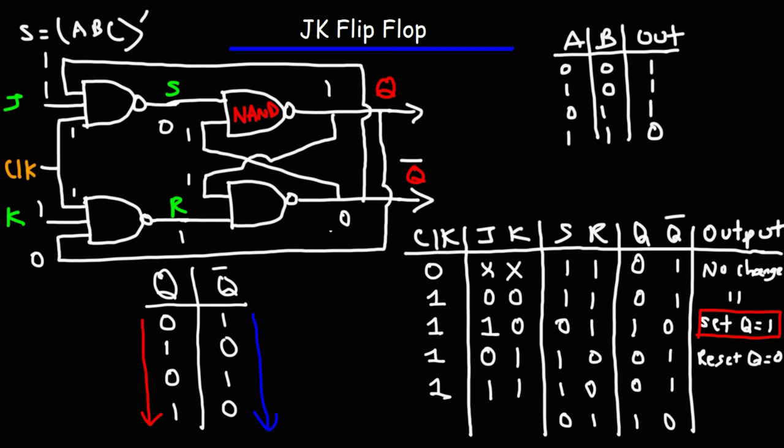So with an active clock input and when J and K are both one, S toggles between one and zero, R toggles between zero and one, Q toggles between zero and one, and Q-bar toggles between one and zero. The values of S, R, Q, and Q-bar are constantly switching states. When S and R are one and zero respectively, Q is one and Q-bar is zero. When S and R are zero and one respectively, Q is one and Q-bar is zero — and they continuously alternate.